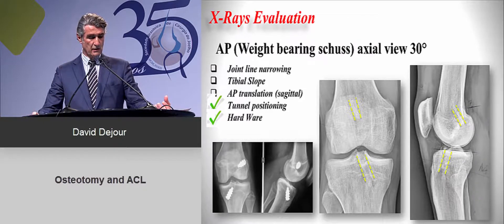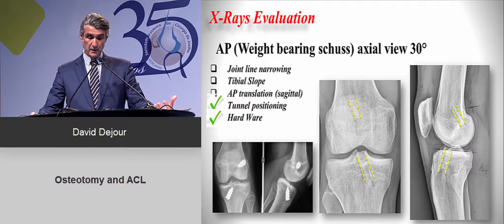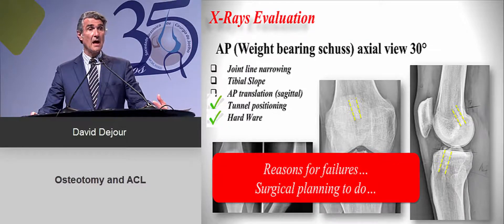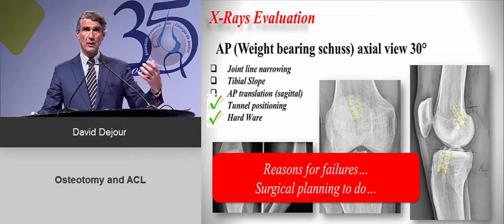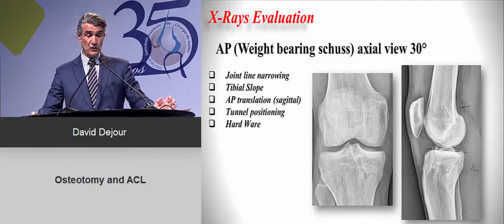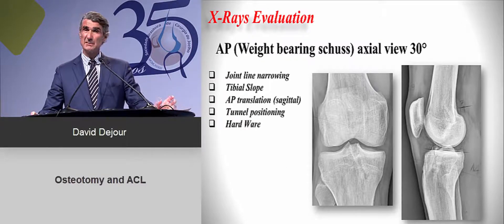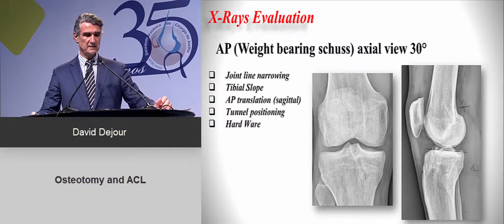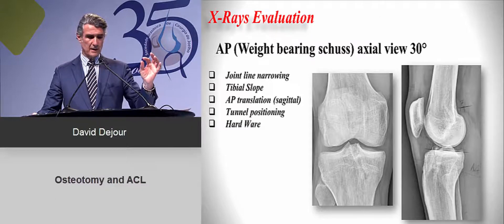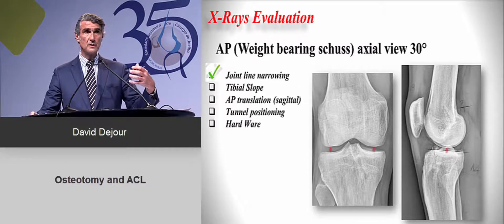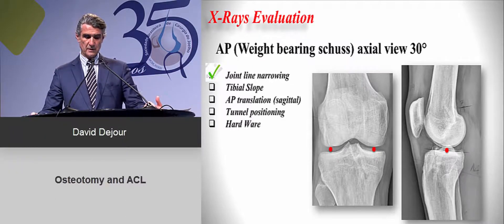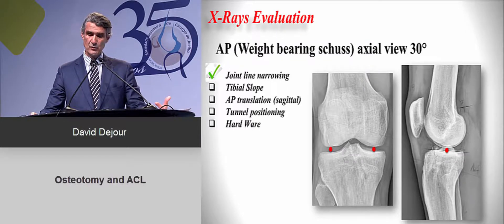When you do X-rays, you first look at the location of the hardware and tunnel positioning — this tells you exactly if there are reasons for failure and how you will plan your revision case. If you have a chronic ACL or medial or lateral meniscectomy in the patient's history, you look at joint line narrowing. It's very important to use the schuss view — a weight-bearing flexion view — to assess the joint line on the AP view and also on the sagittal.